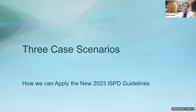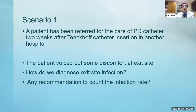I will use three case scenarios to illustrate how we can apply the new 2023 ISPD guideline on managing catheter-related infections. For the first case, a patient has been referred for care of a PD catheter two weeks after Tenckhoff catheter insertion in another hospital. The patient reports some discomfort at the exit site. The question is: how do we diagnose exit site infection, and are there any recommendations to count the infection rate?